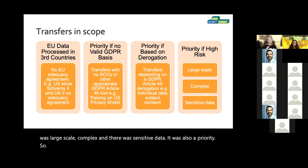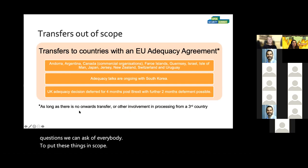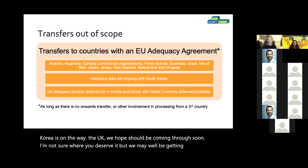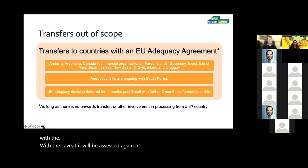So what we're trying to do with these things is eke out quick, simple questions we can ask of everybody to put things in scope. A third country is simply a country that doesn't have a predefined adequacy agreement. South Korea is on the way; the UK should hopefully be coming through soon — though it will be assessed again in four years' time.